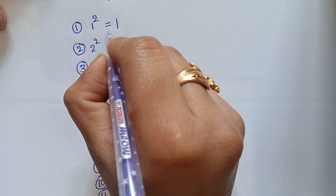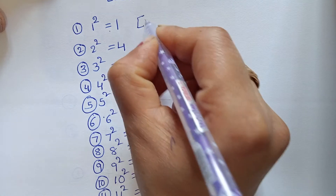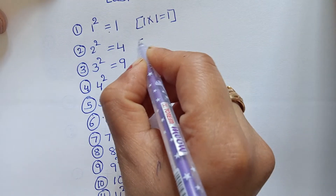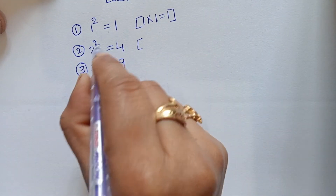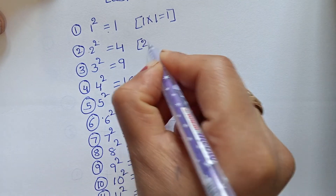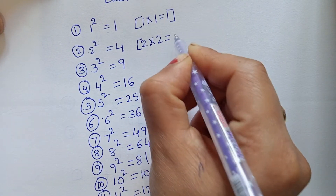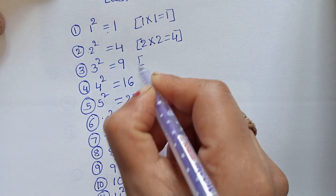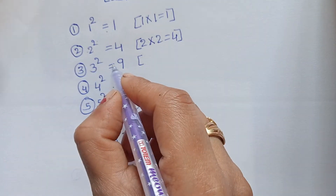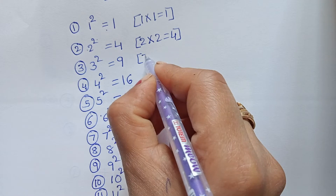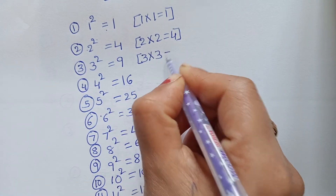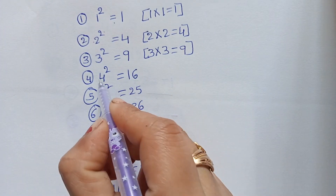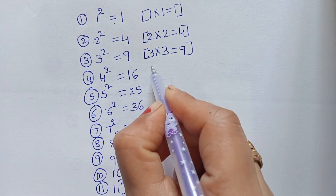One square equals to one. One into one equals to one. Two square equals to four. Two into two equals to four. Three square equals to nine. Three into three equals to nine. Four square equals to sixty-nine.